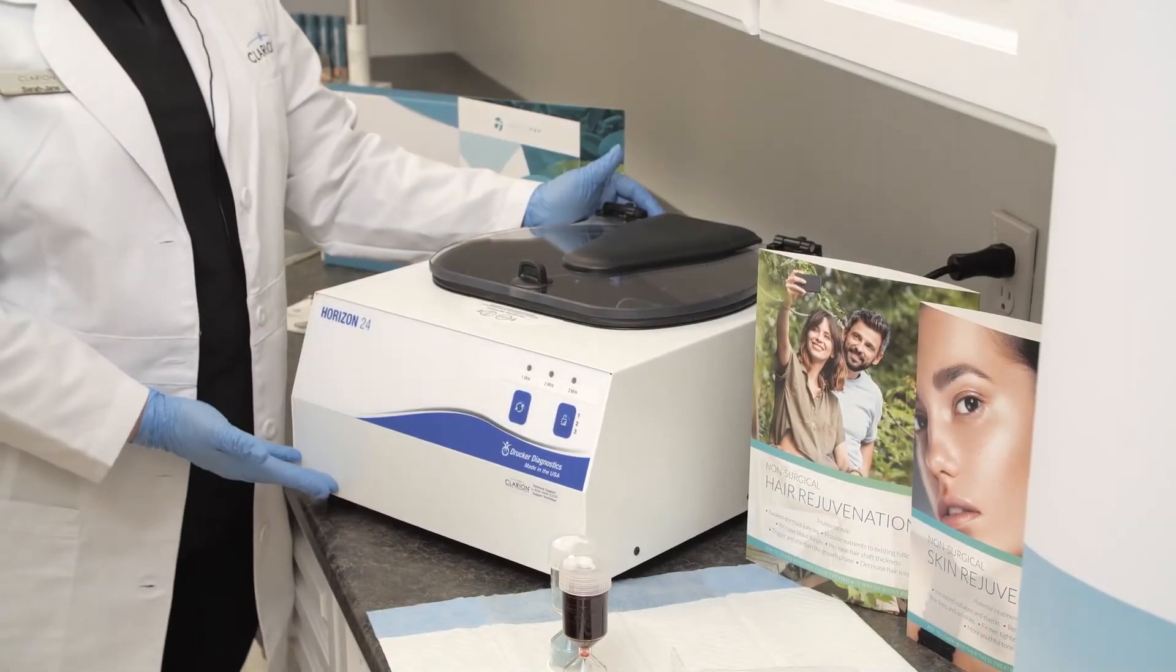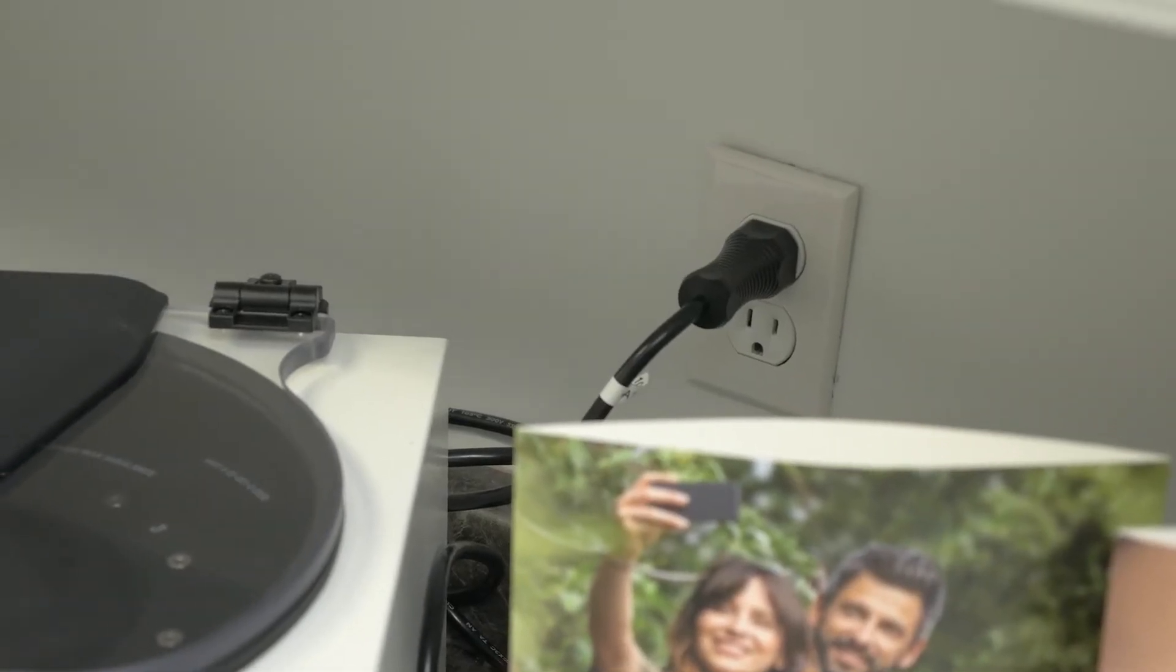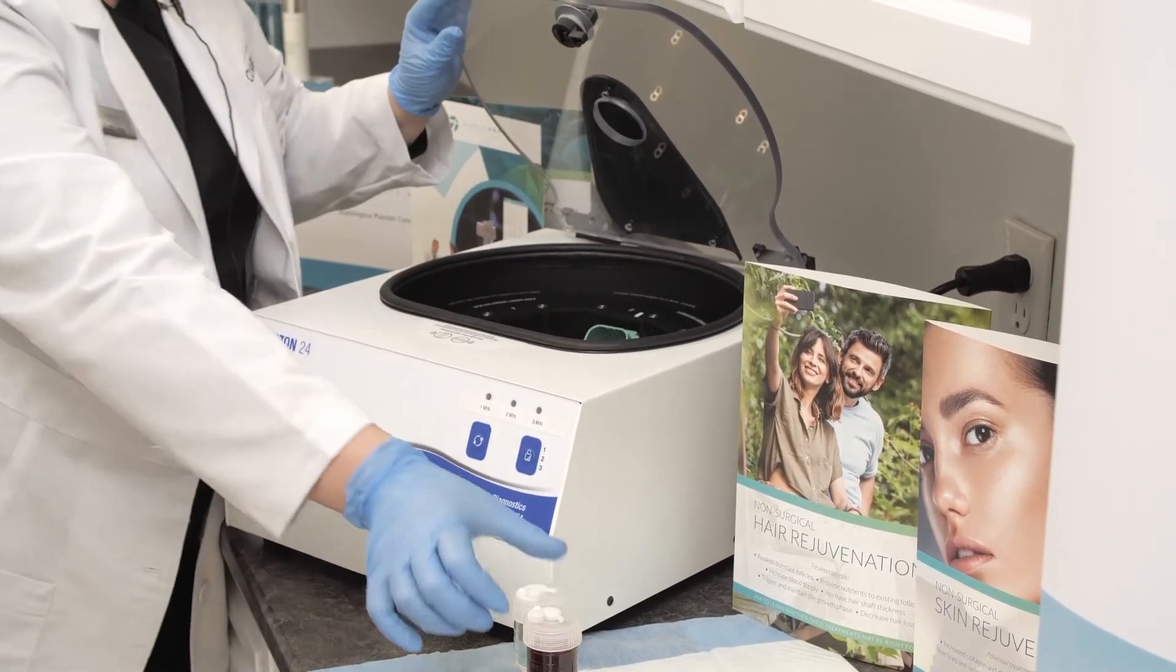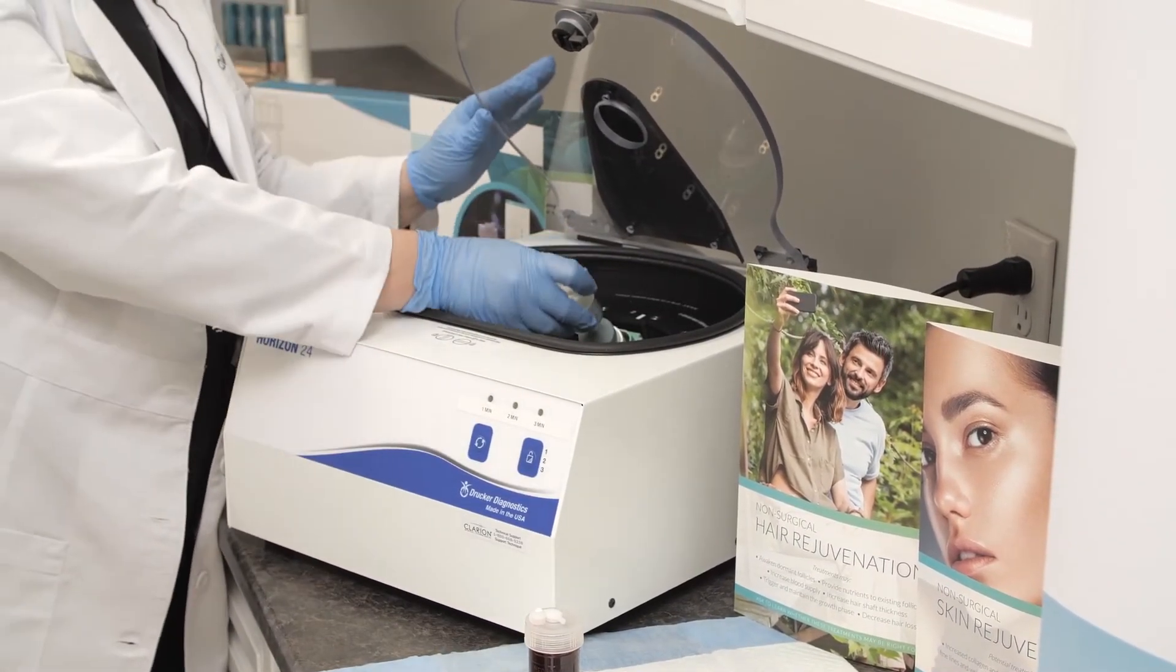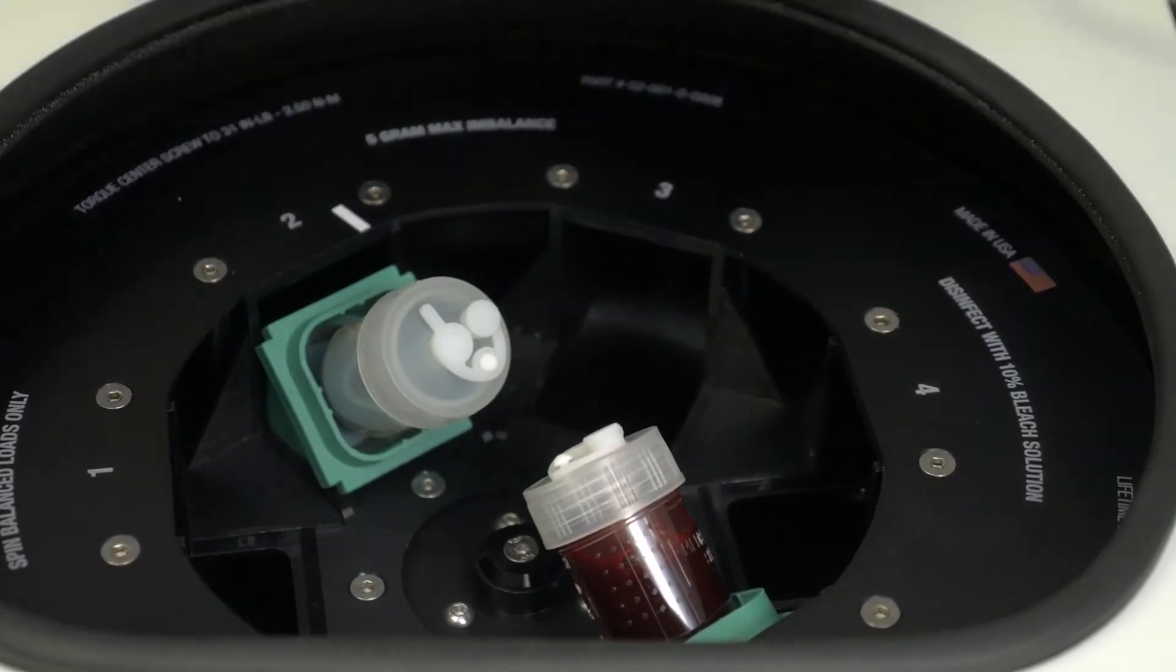Ensure the centrifuge is on a stable surface, power cord attached and unit is turned on. Both are located on the back of the centrifuge. Place the World PRP tube and counterweight tube into the centrifuge aligned across from each other. Close the lid and lock.